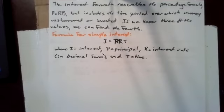The interest formula resembles the percentage formula P equals RB, but includes the time period over which money was borrowed or invested. If we know three of the values, we can find the fourth.